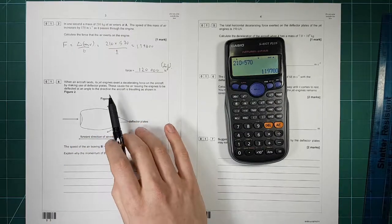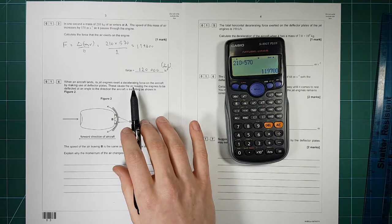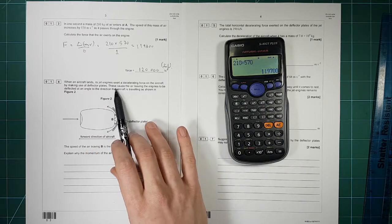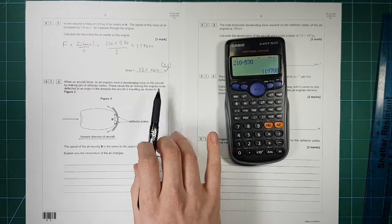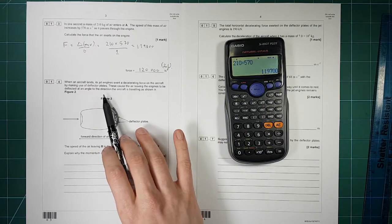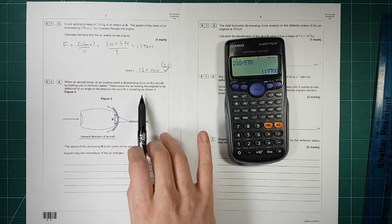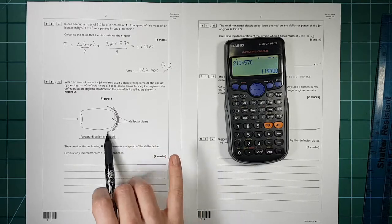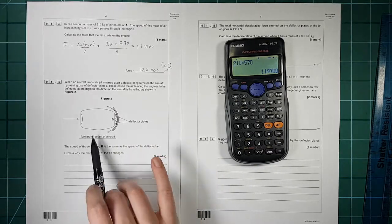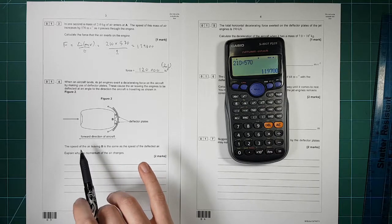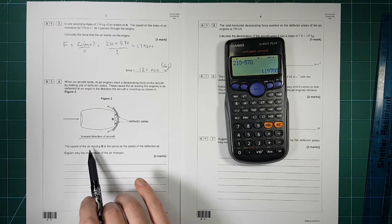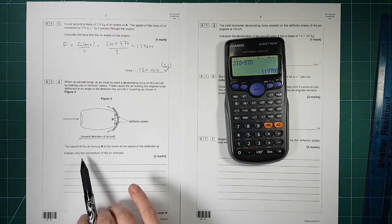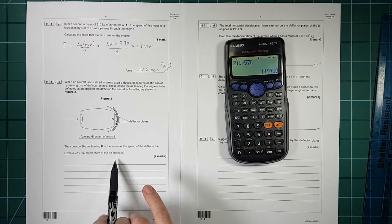When the aircraft lands its jet engines exert a decelerating force on the aircraft by making use of these deflector plates which move in. They cause the air leaving the engines to be deflected at an angle to the direction of the aircraft that's travelling. So the air instead of going out that way is now coming this way in the same direction of the motion of aircraft. The speed of the air leaving B is the same as the speed of the deflected air. Explain why the momentum of the air still changes.